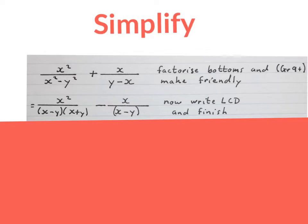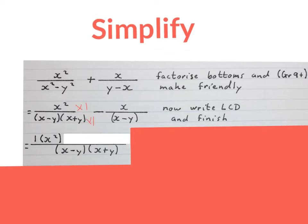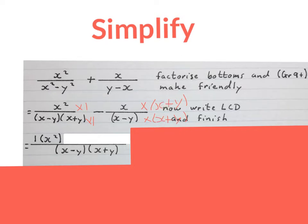Now we're going to write the LCD and keep it and finish the problem. My LCD in this case will be (x minus y)(x plus y) in brackets — keep your line. You ask yourself: with what do I times this bottom to get this bottom? If I times this by 1 I'll get this, so I also times the top by 1 — I write 1 bracket x squared close the bracket. Then you ask: with what do I times this bottom to get the full denominator? I have to times by x plus y, so I also times the top by x plus y. Then we write minus x times (x plus y) at the top.